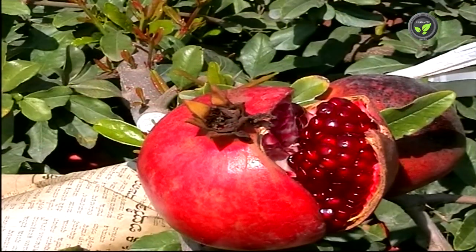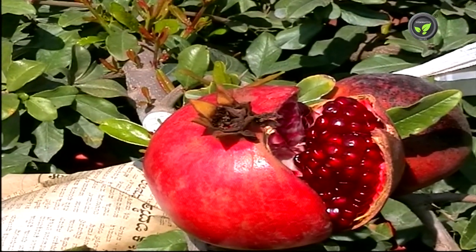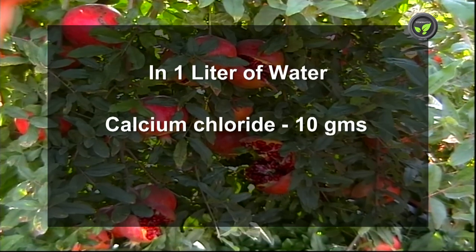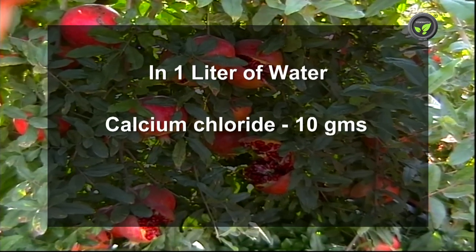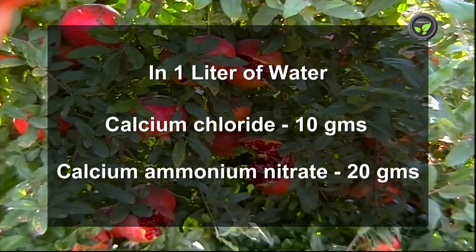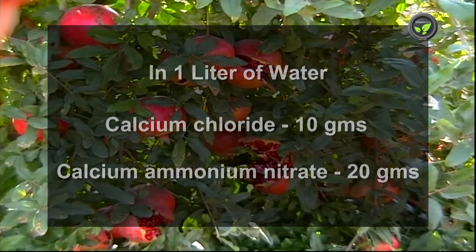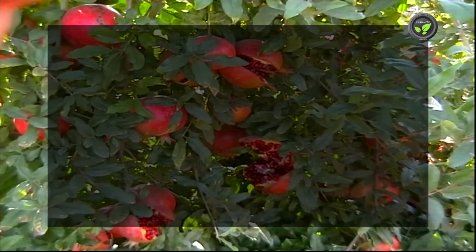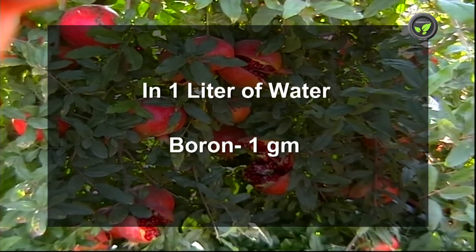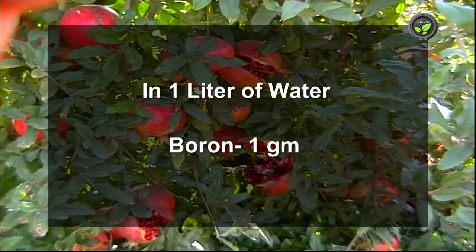If the problem of fruit cracking is severe, spray 10 grams of calcium chloride or 20 grams of calcium ammonium nitrate in 1 litre of water. Also spray 1 gram of boron in 1 litre of water.